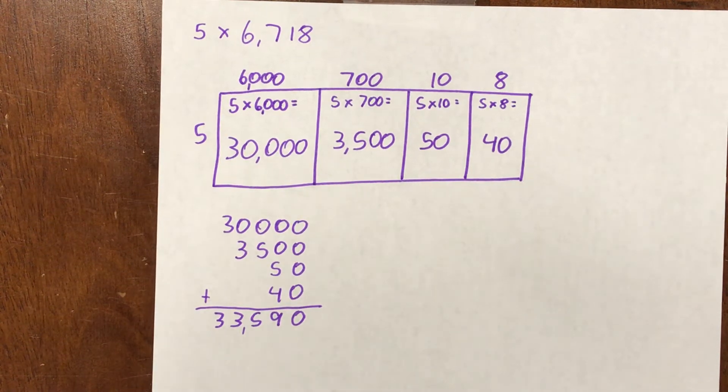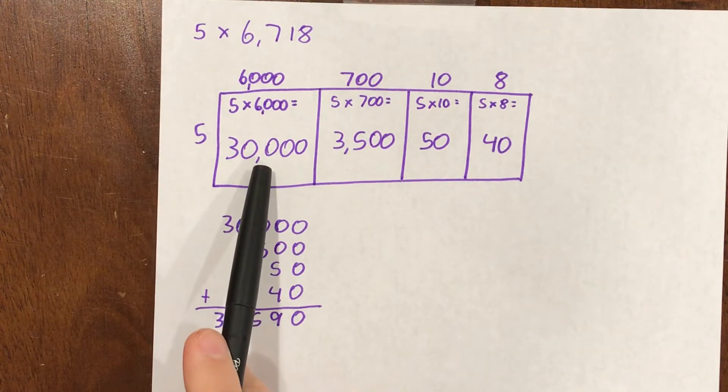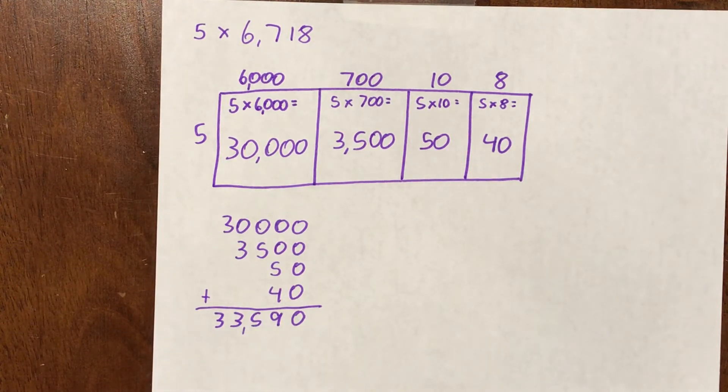Nice work with the try one more. A couple of questions to make sure we're on the same page. First, how did I get 30,000 for that first partial product? Go ahead and say it out loud.